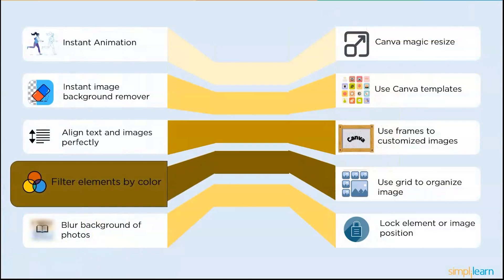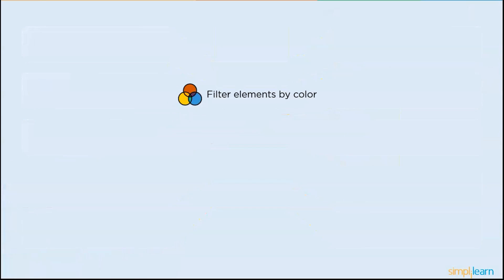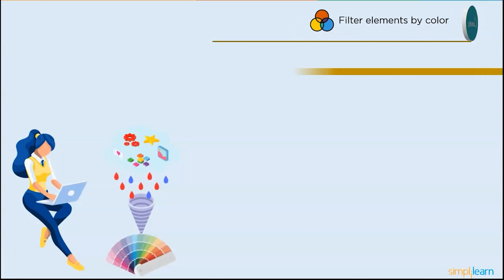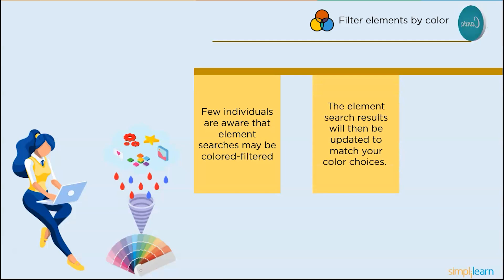And the next one is filter the elements by colors. Canva has many different elements available. Instead of utilizing secret codes to find pieces or images with a similar design, what if you only require the elements of a single color type? Few individuals are aware that element searches may be color filtered. Simply enter the element search term, choose the desired color palette by clicking the filter icon, and then press the enter key. The element search results will then update to match your color choices.